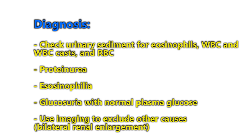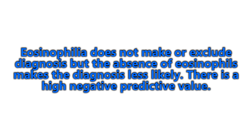For diagnosis, few clinical or routine laboratory findings are specific enough. We should check urinary sediment for eosinophilia, WBCs and WBC casts, and RBCs. We should also look for proteinuria, eosinophilia — which was part of the classic triad — and glucosuria with normal plasma glucose. If you're seeing sugar in the urine but a normal fingerstick glucose, that should raise suspicion. Imaging is used to exclude other causes, such as bilateral renal enlargement. Eosinophilia does not make or exclude the diagnosis, but its absence makes the diagnosis less likely — it has a high negative predictive value.